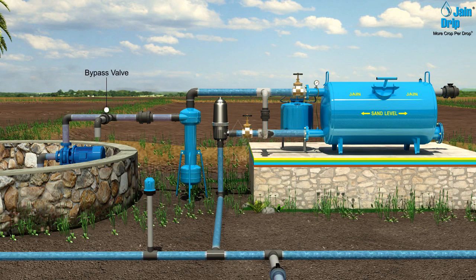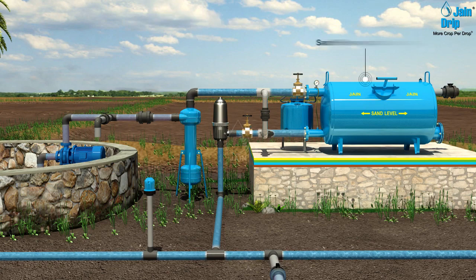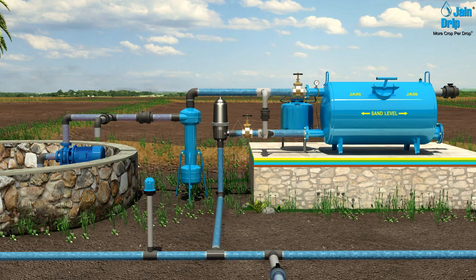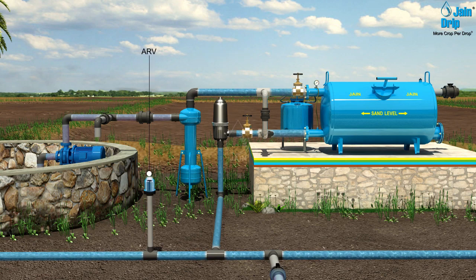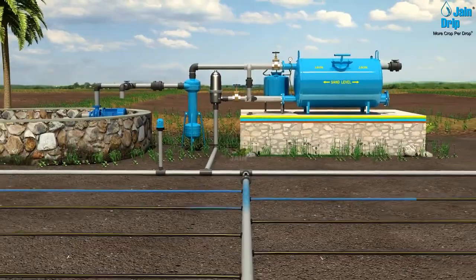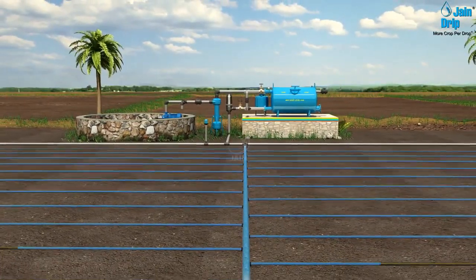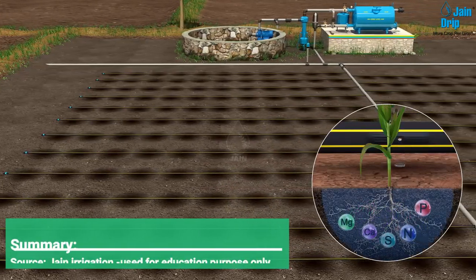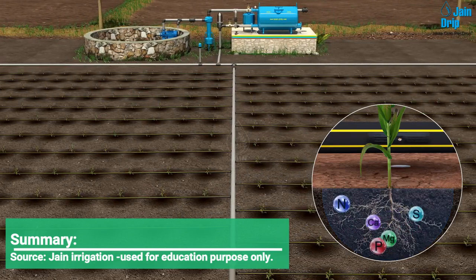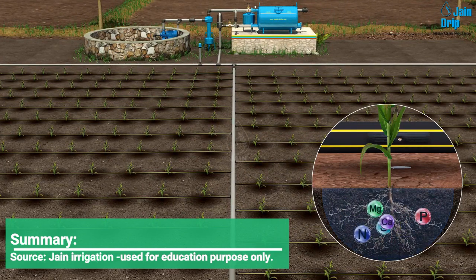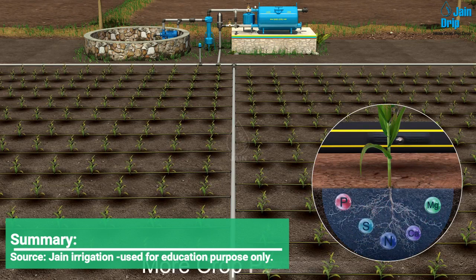The bypass mechanism adjusts flow and pressure. Water is filtered through a hydrocyclone filter or sand separator to remove sand particles. The sand filter traps vegetative matter and algae. The fertilizer tank injects fertilizer into the irrigation line. The screen filter removes fine particles like silt and clay. The air release valve removes air and vacuum from the pipeline. Through the network of mainline, sub-mainline, and laterals, water is distributed uniformly over the field as per crop geometry and water requirement. Optimum and slow application of water and fertilizer enhances crop yield, improves quality, increases farmer income, and ensures more crop per drop.